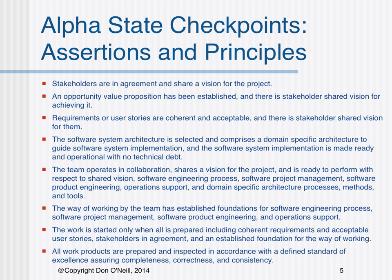As the twig is bent, so grows the tree. To get your project off on the right foot, expectations should be set and evidence should be sought on the following assertions and principles based on alpha state checkpoints. Number one, stakeholders are in agreement and share a vision for the project. Number two, an opportunity value proposition has been established and there is a stakeholder shared vision for achieving it.